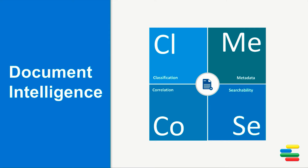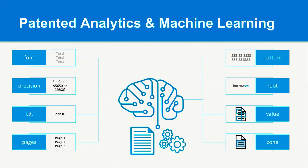There are four elements of document content value. To truly drive maximum efficiency and productivity around document-centric processes, technology must be available to create searchable content, classify those documents, extract important data, and create correlation to other existing documents.